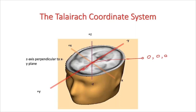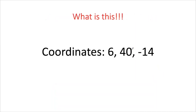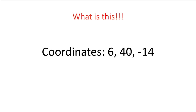Moving forward from the origin along the y-axis increases the y value, while moving to the back gives negative values like minus 20 or minus 30. Moving up changes z, and moving left or right changes x. That is how this coordinate system works. For example: what brain area is represented by the coordinate 6, 40, minus 14?